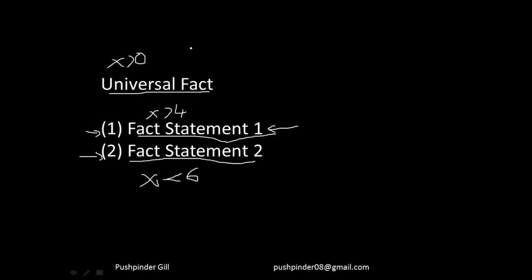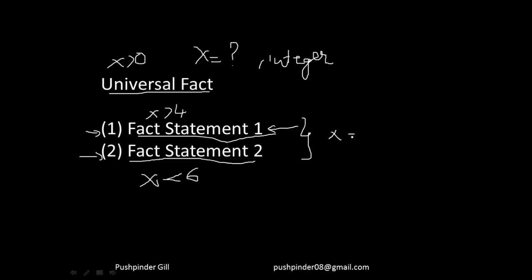If I ask what is the value of x, I say x is positive and also an integer. Fact statement 1 says x is greater than 4, so x can be 5, 6, 7, 8... Fact statement 2 says x is less than 6, so x can be 1, 2, 3, 4, 5. If I combine both statements: x is greater than 4 but less than 6 and an integer. That means x has to be equal to 5. So this is how you solve a data sufficiency question.